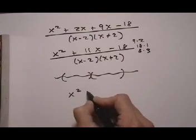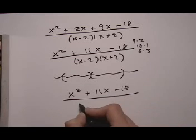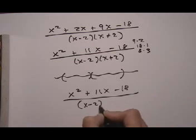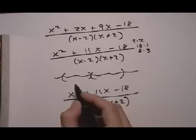So our final answer would be x squared plus 11x take away 18, all over the common denominator take away 2, x plus 2. And you can also write this multiplied out on the bottom.